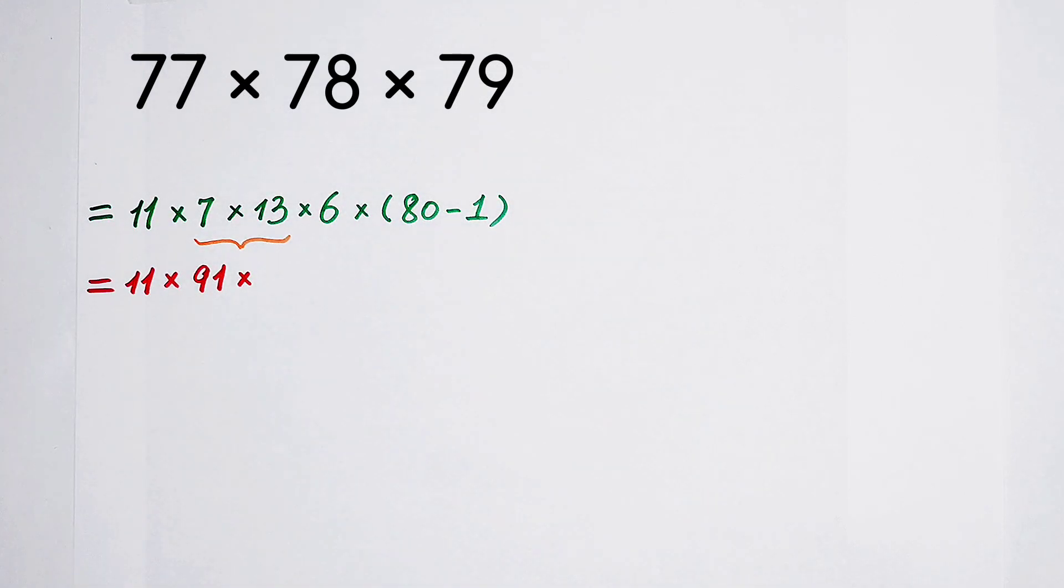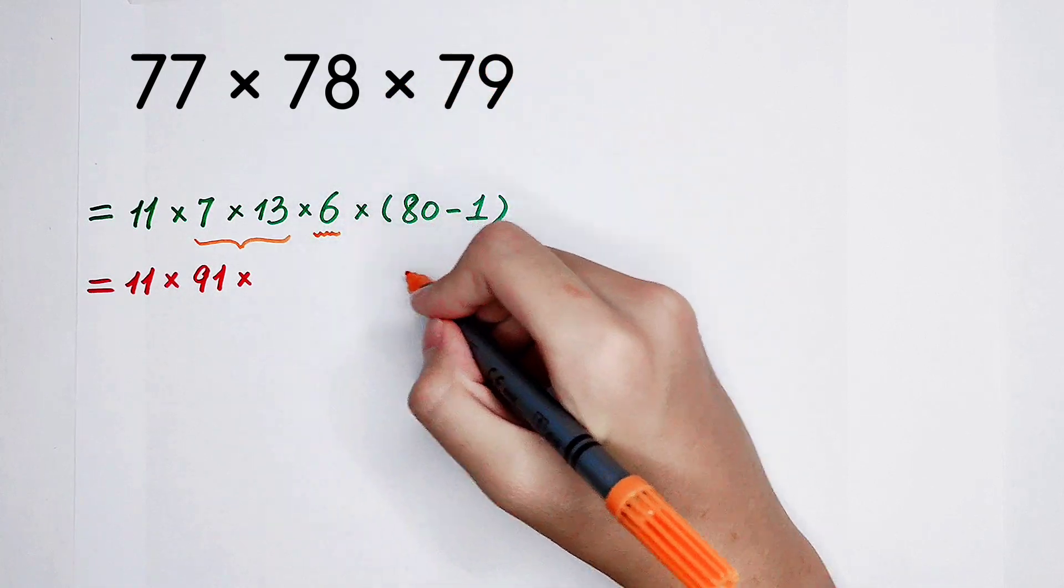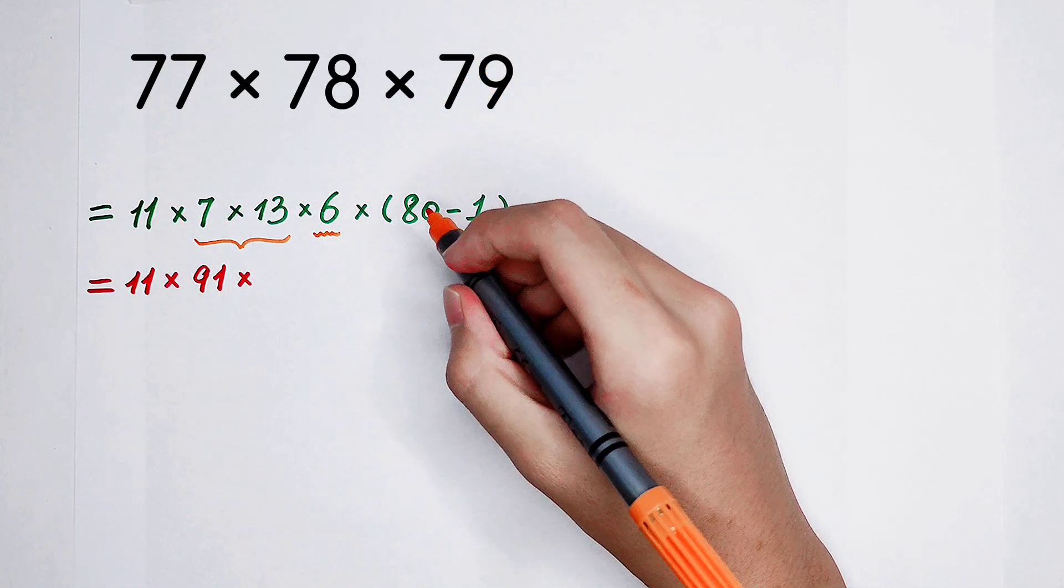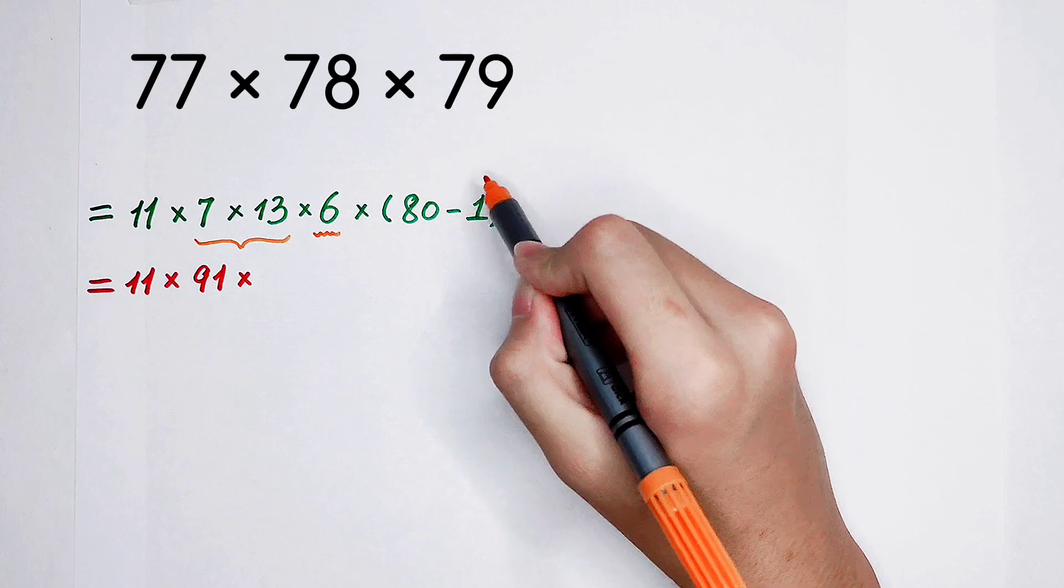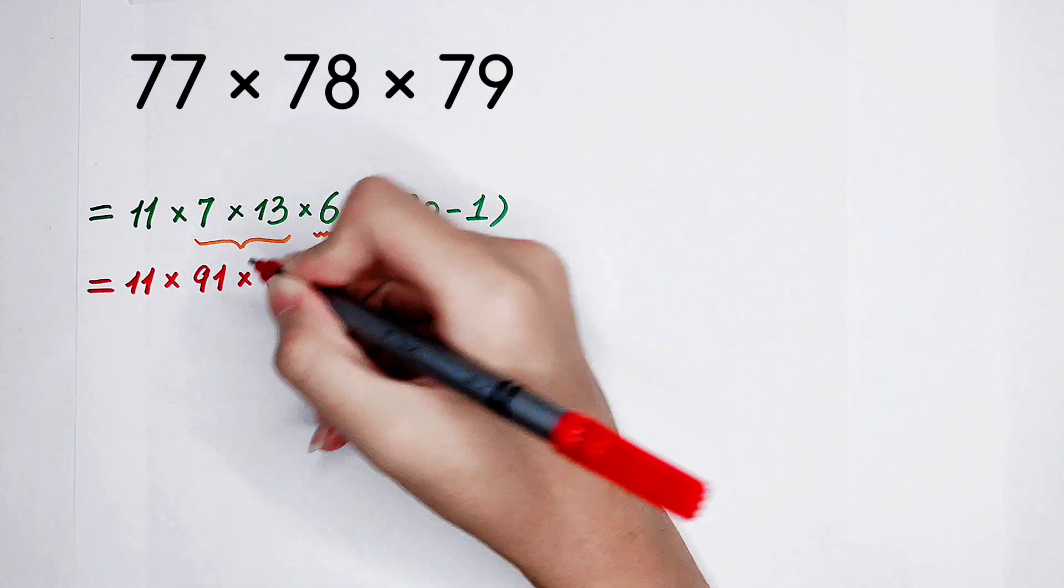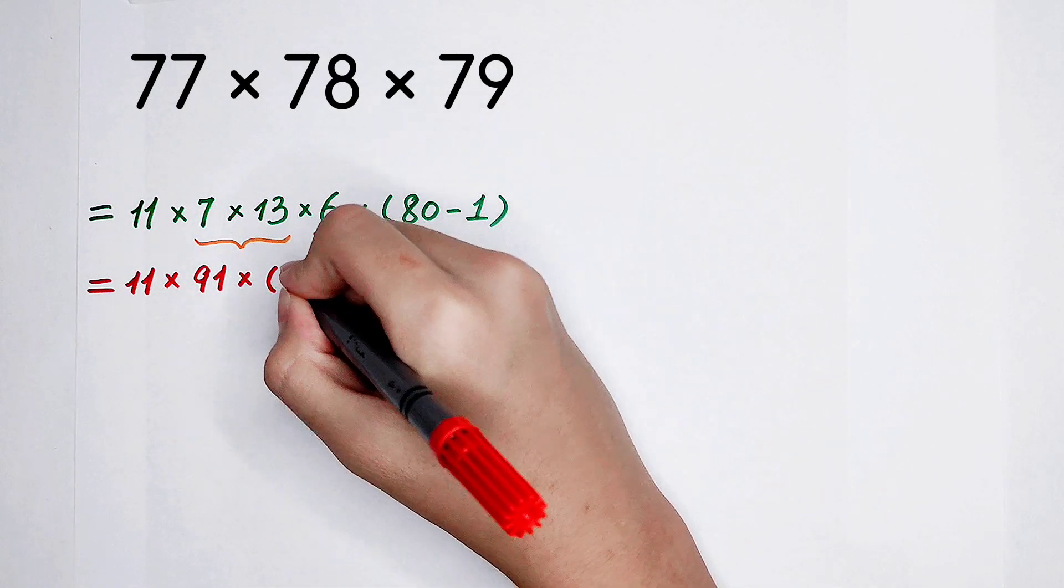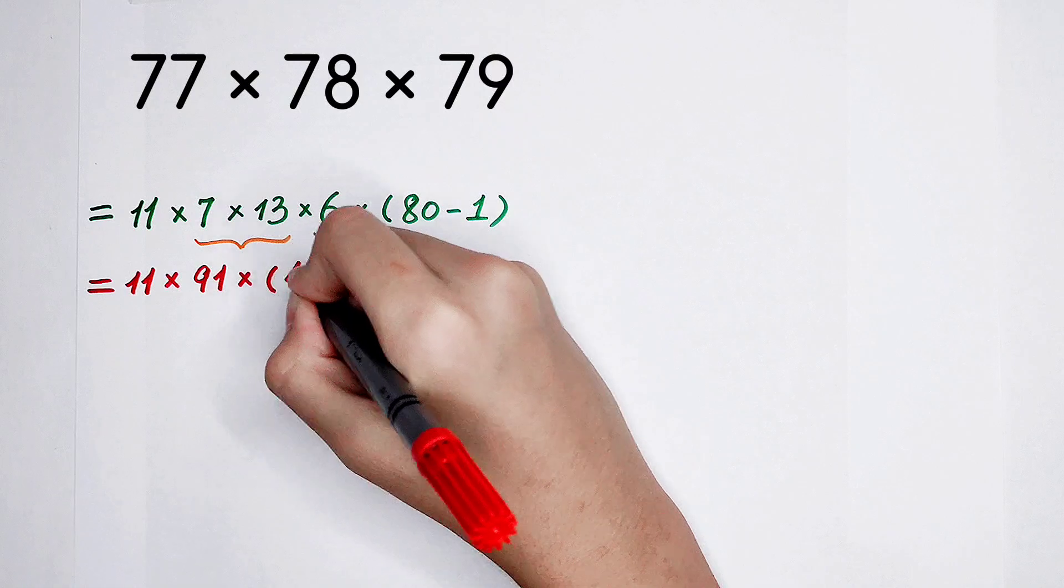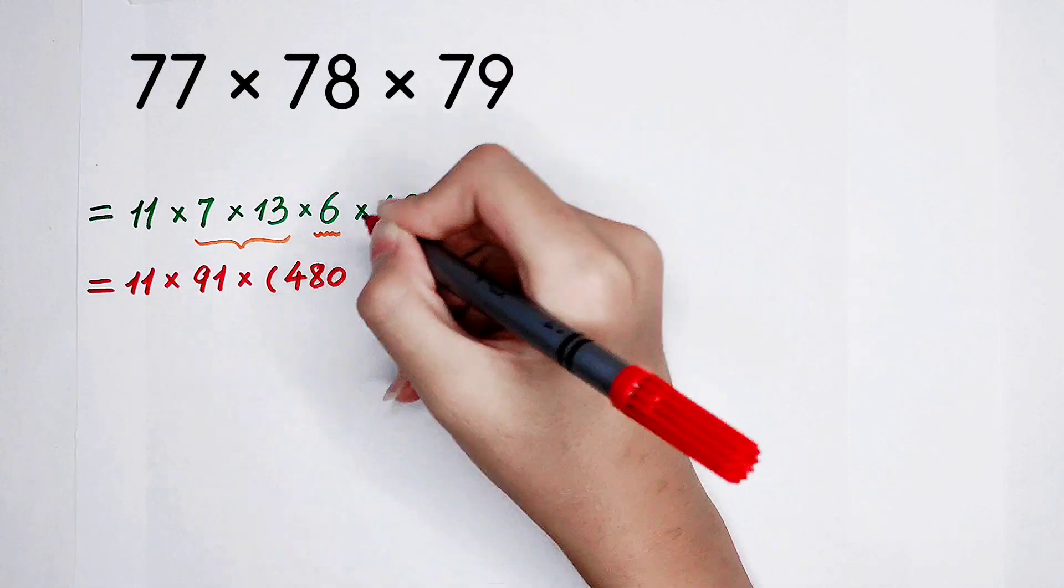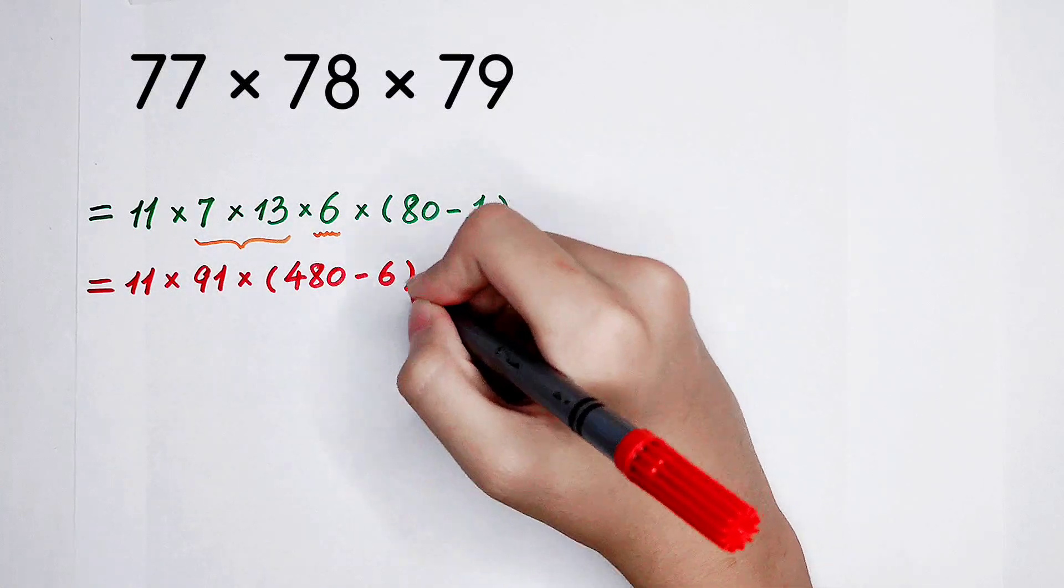And I would like to let this 6 be together with this, that is, let it jump into the bracket. And the bracket is still here. 80 times 6, it is 8 times 6 is 48. And then put a 0 here, and then minus 6. Okay, the bracket is still here.